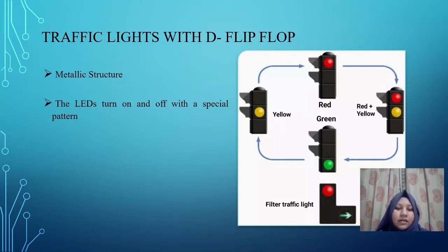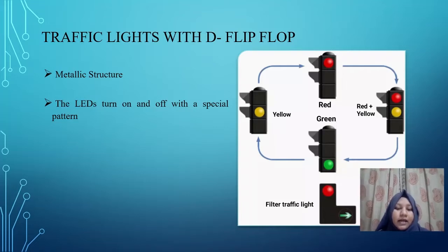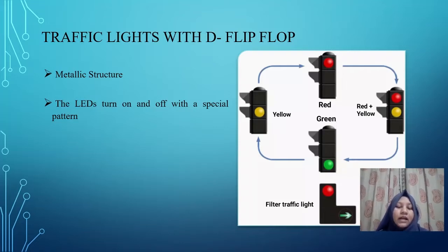The traffic light depends on an array of three lights with different colors connected electrically. The whole system is packed into a metallic structure. The LEDs turn on and off in a special pattern depending on the circuit. The red light stays on for some moment, then yellow coordinates with red and green, and finally only green is on. These lights result from the sequential logic of D flip-flop. The output of two D flip-flops are fed into an AND gate, and the green light turns on only when the output of both D flip-flops are high.